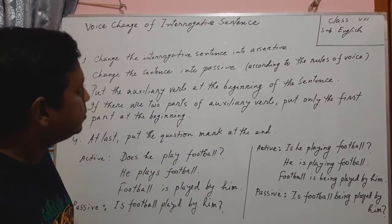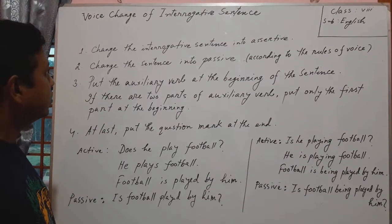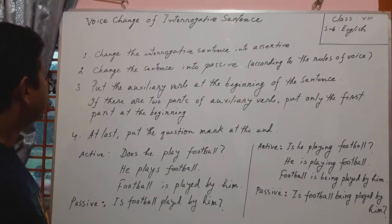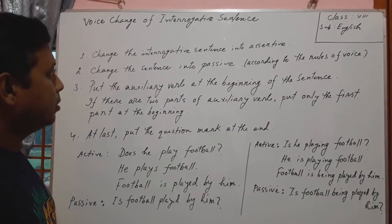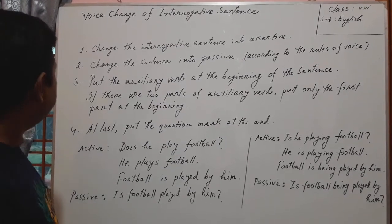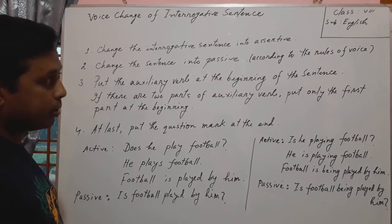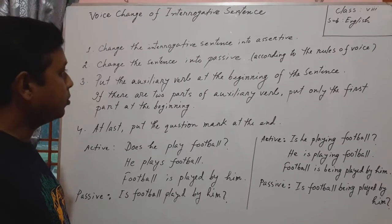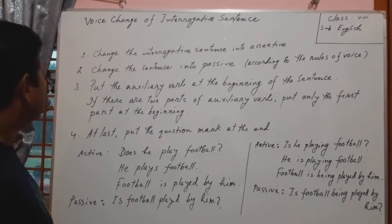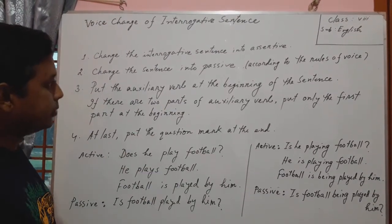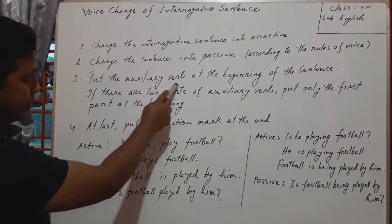First, if we want to change the voice of an interrogative sentence, we have to change the interrogative sentence into assertive according to the rules of passive voice. We all know the rules of changing passive voice, and according to that rule we have to change the sentence into passive. Then we have to follow this step: put the auxiliary verb at the beginning of the sentence.